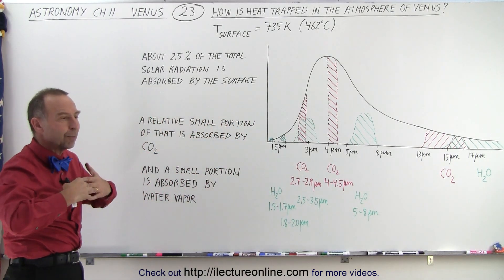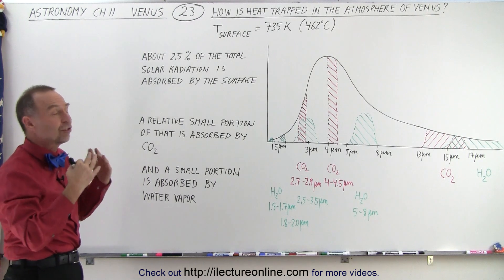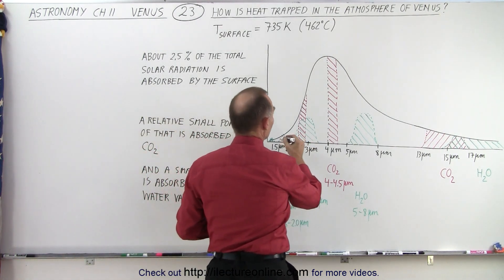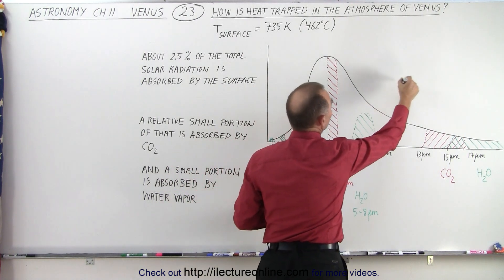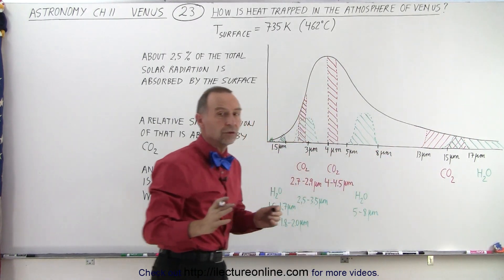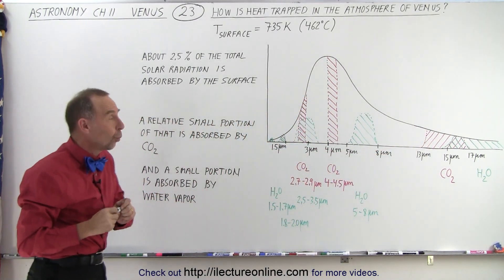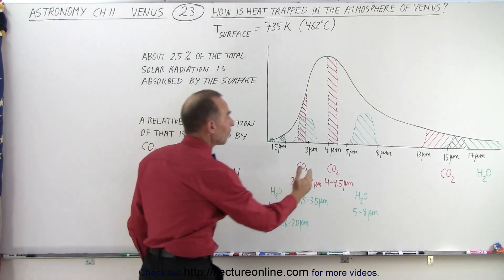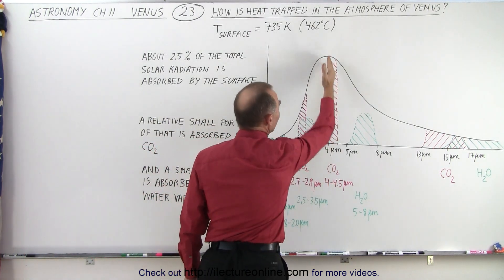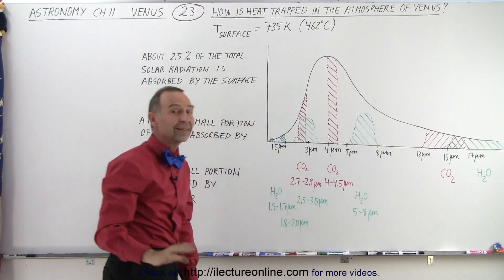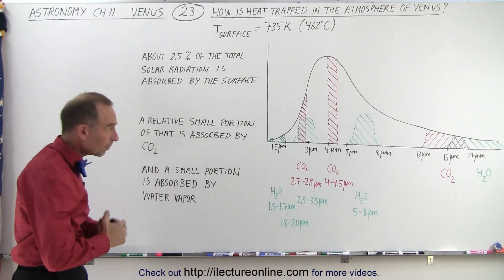of course the black body emission curve is much different on Venus than it is on Earth. On Earth, the black body curve would be much more skewed to the right and wouldn't be nearly as high, and so the amount of absorption depends a lot upon what that black body curve looks like. So we can see here that the peak for Venus is about 4 micrometers, where the peak for Earth is much closer to about 10 micrometers.